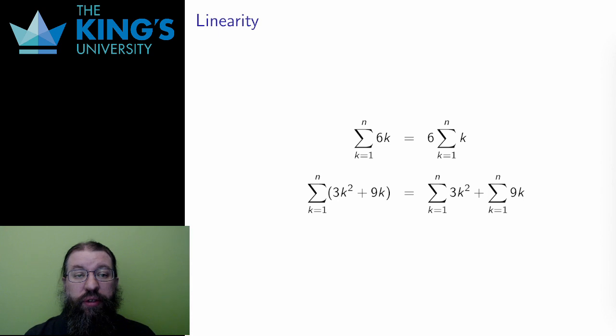Let me go over some properties. Sigma notation, unsurprisingly since it is a notation for sums, is linear. If I have a constant in the term, I can factor that constant out. Adding up 6 times the index k is the same as adding up the index k and then multiplying by 6. This is just the distributive law for multiplication over addition.